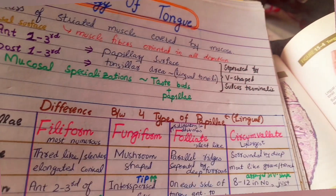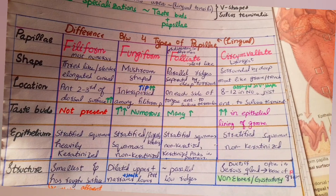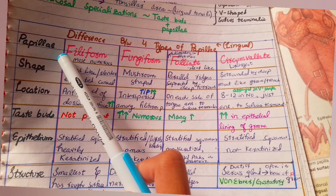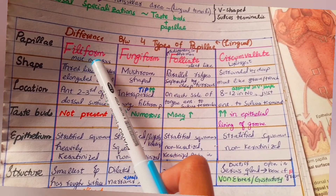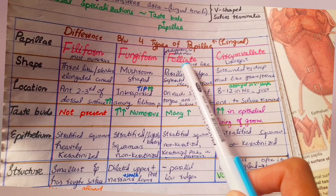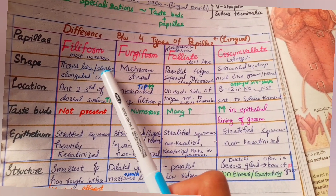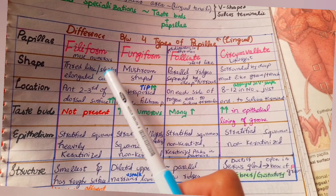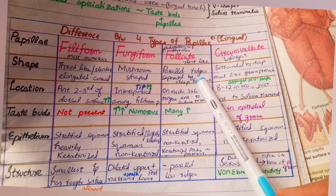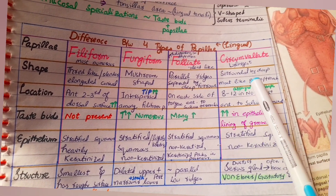Mucosal specializations of the tongue are lingual papillae and taste buds. There are four types of lingual papillae: filiform papillae, which are the most numerous; fungiform papillae; foliate papillae; and circumvallate papillae. Filiform papillae are thread-like, slender, and elongated. Fungiform are mushroom-shaped, foliate are leaf-like, and circumvallate are the largest and are surrounded by deep grooves or trenches.